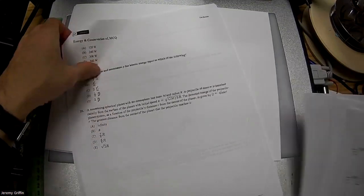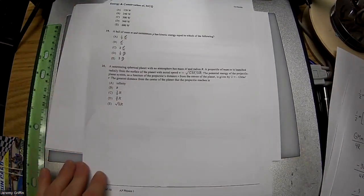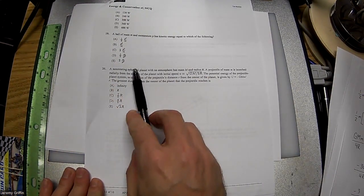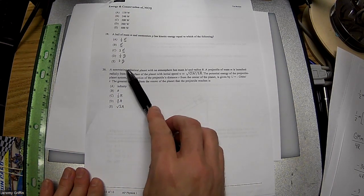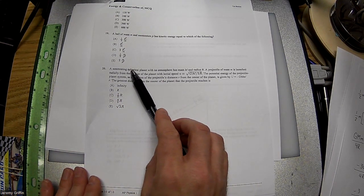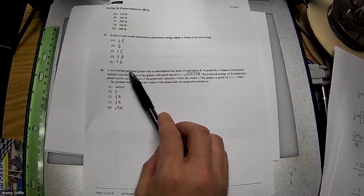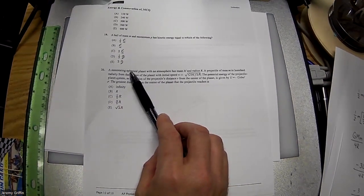All right, so we're back here. Number 20. We got a non-rotating spherical planet. Now, it's interesting they mentioned that detail. I want to mention that to you. This is kind of a side thought, but here was a non-rotating spherical planet. When I set this up and solved it, I wasn't thinking about the planet rotating, but that wouldn't actually be a technical detail that would matter.